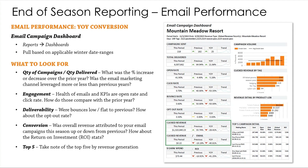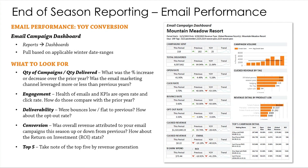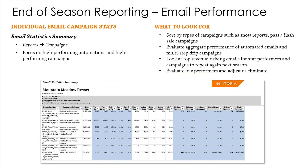Conversion is covered towards the bottom of the graph — was your overall attributed revenue to email up or down from the previous season? Also keep tabs on your ROI stats: was the clicked revenue per email and earned dollars per email up or down compared with the previous year? Over on the bottom right, I always like to highlight what were the top five revenue-generating emails of the season and make sure these are in line with the core promotions you were running and match your expectations.